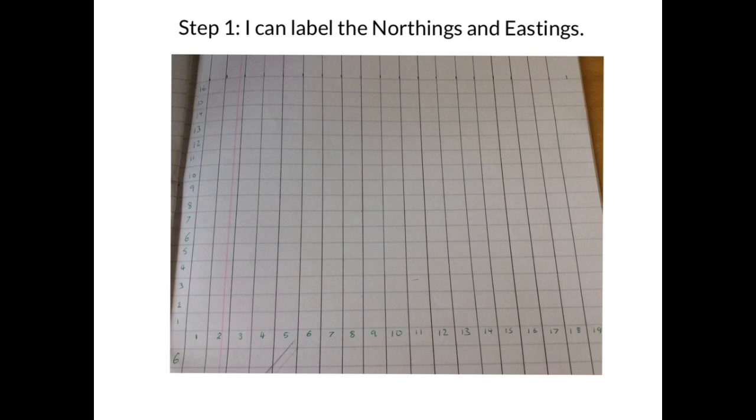So once you've got some squared paper, what you then need to do is be able to label the northings and eastings. The northings is basically the y-axis going up here. The eastings, or the x-axis, goes along the bottom here. Now on different maps, you might see them labeled with letters and numbers, or vice versa, or sometimes with coordinates. You can also get just numbers along the eastings and numbers along the northings, like so.